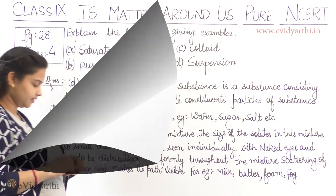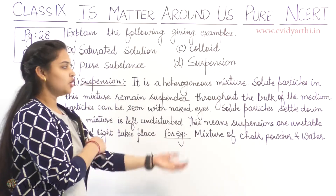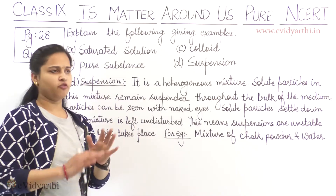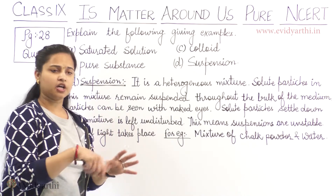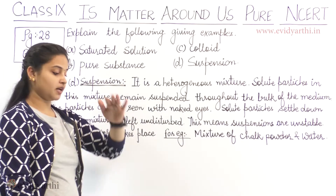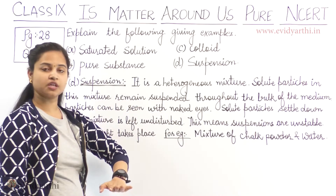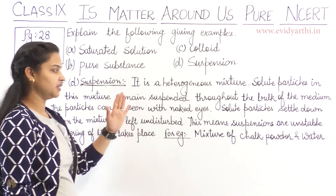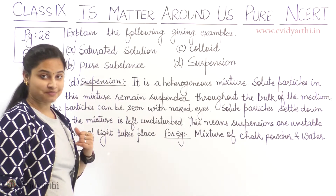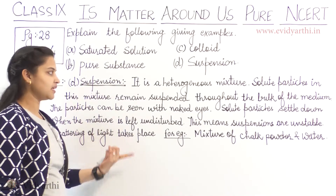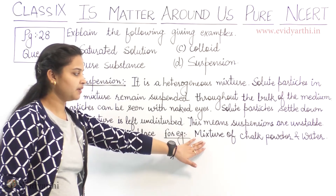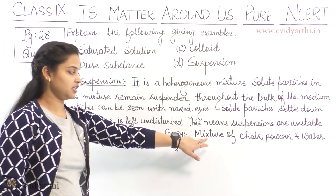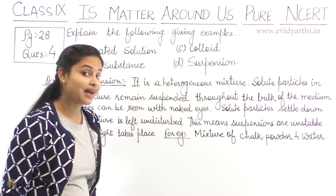Suspension: It is a heterogeneous mixture. Solute particles in this mixture remain suspended throughout the bulk of the medium. The particles can be seen with naked eyes. Solute particles settle down when the mixture is left undisturbed — this means suspensions are unstable. Scattering of light also takes place in suspension. For example, a mixture of chalk powder and water. I would suggest you do this experiment to understand what an actual suspension is.